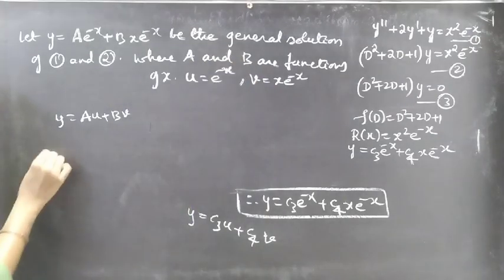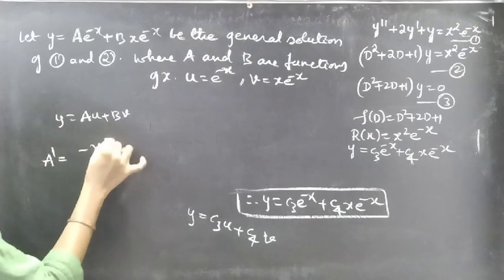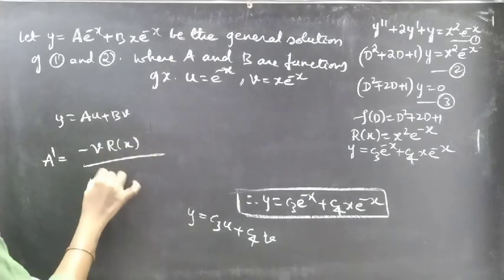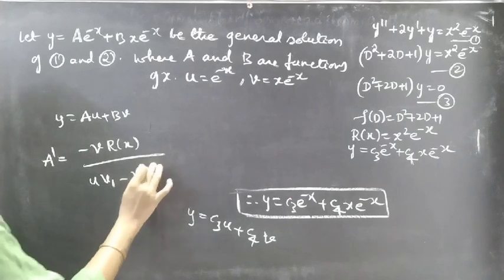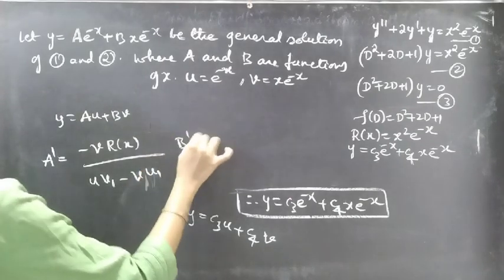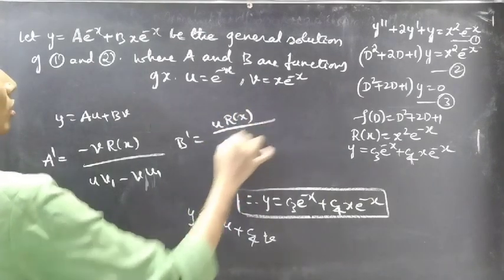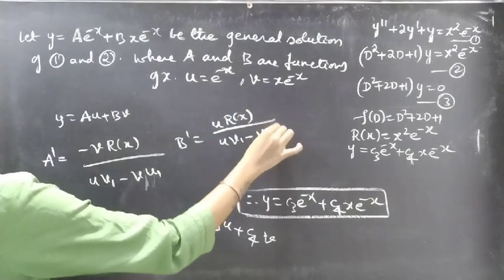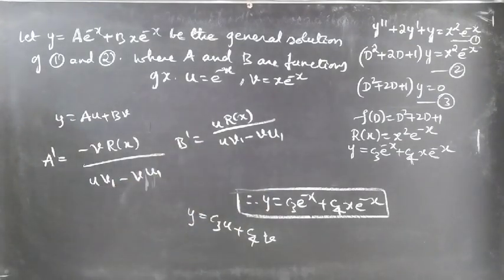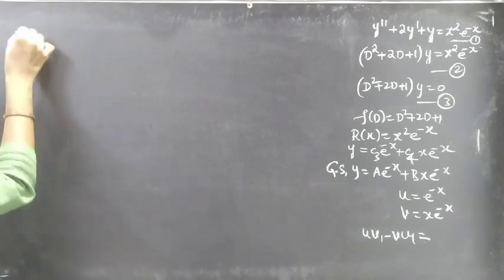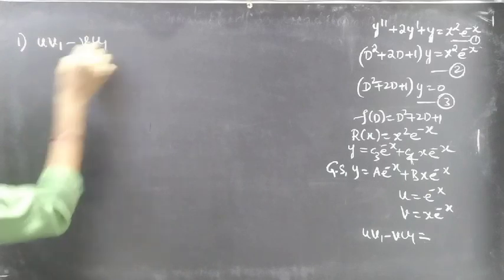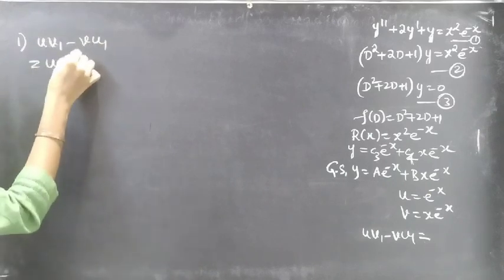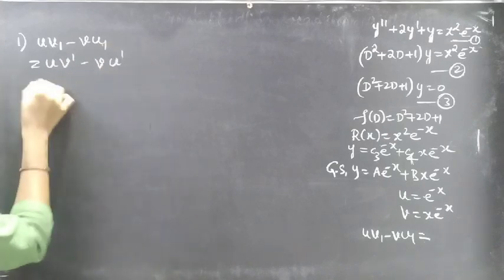The formulas for a' and b' in variation of parameters are: a' = -v·R(x) / (uv₁ - vu₁) and b' = u·R(x) / (uv₁ - vu₁), where v₁ = dv/dx and u₁ = du/dx. Since uv₁ - vu₁ appears in both formulas, let's compute it first.